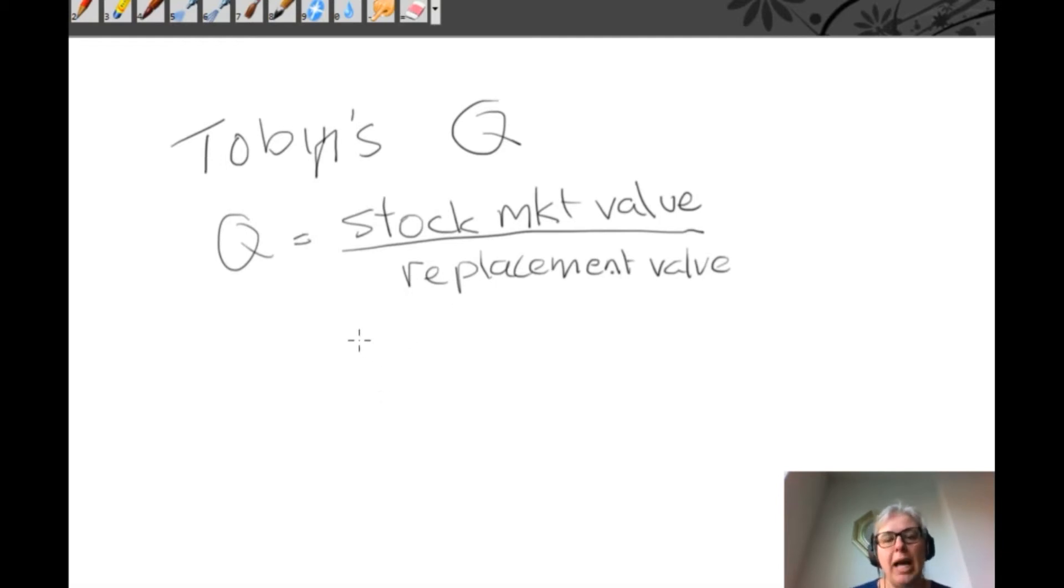So when things are in balance, it's a kind of equilibrium concept. Then this is approximately equal to one, because it basically says that the stock market value of the asset is representing the same amount as its replacement value.